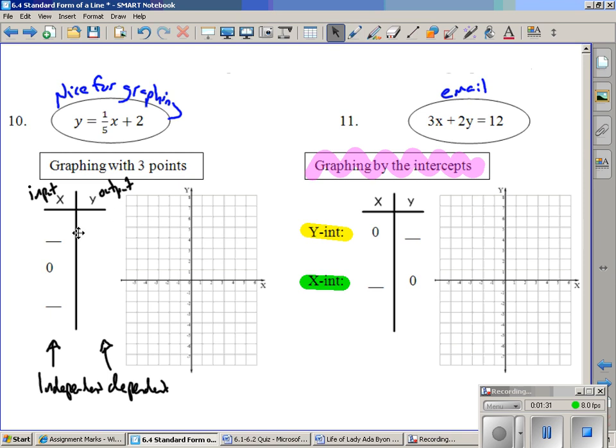So I'm going to choose some x values. I choose x is 0 because that's an easy one. If x is 0, then a fifth of 0 is just plain old 0, and 0 plus 2 is 2. That's an easy one to graph, 0, 2. But that's not enough information to get me a line drawn, so I need to choose some other ones.